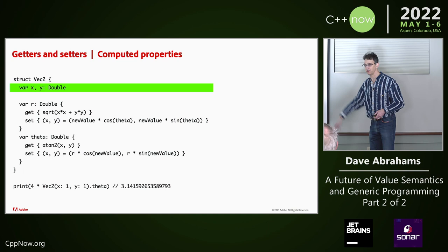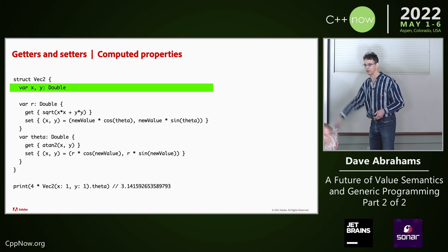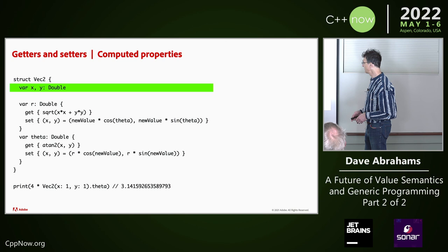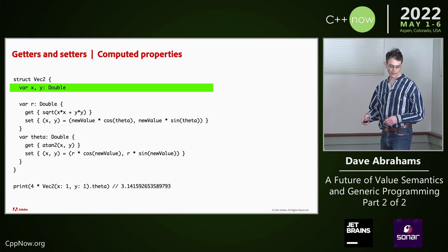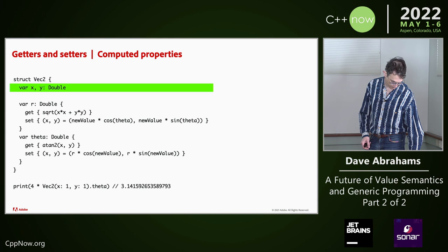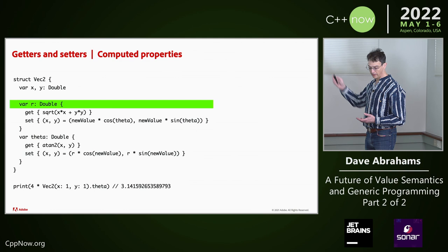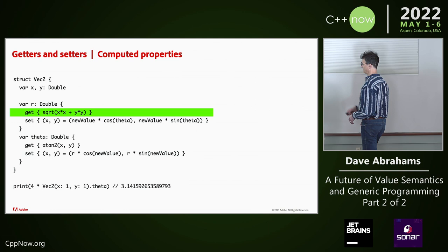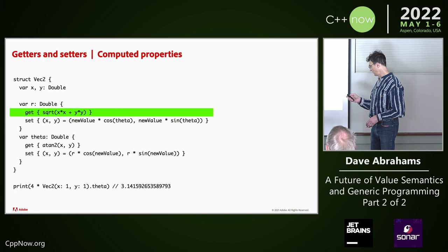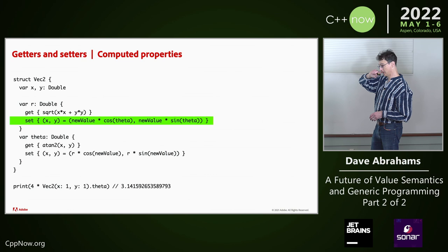We're back in Swift context here. The first place that they show up is in computed properties. I've got a mathematical vector with X and Y — these are called stored properties. I also want to expose the polar form of this vector, so I can create computed properties R and theta. Inside R, the get clause is the getter — that's the thing that computes the current value. The setter is what sets the value.